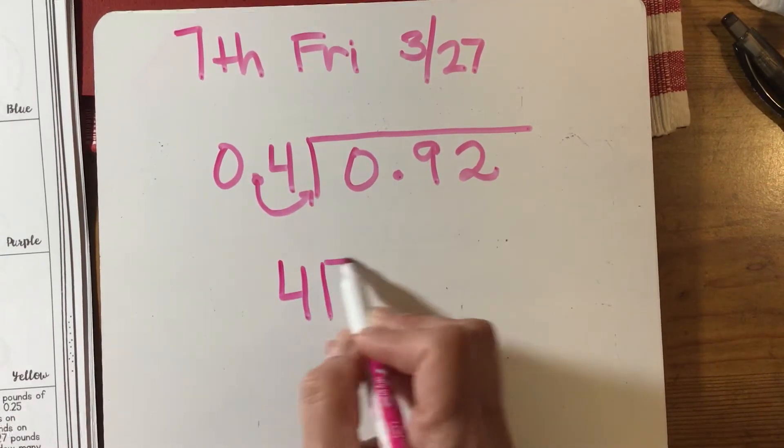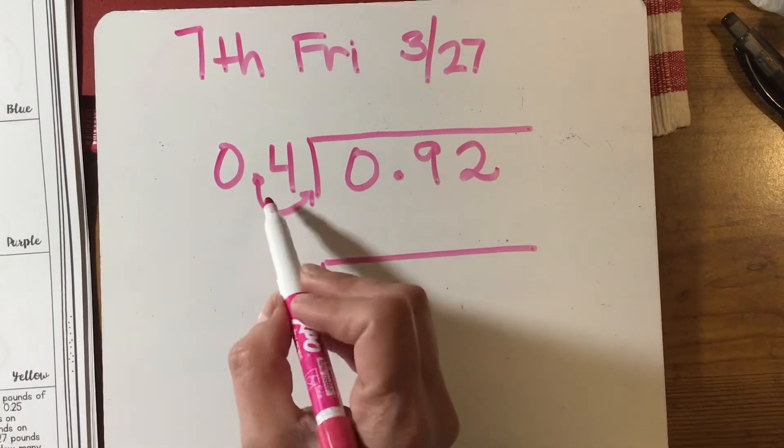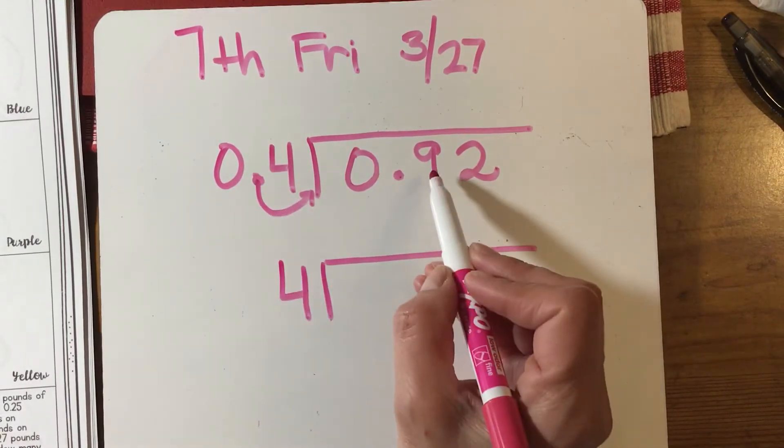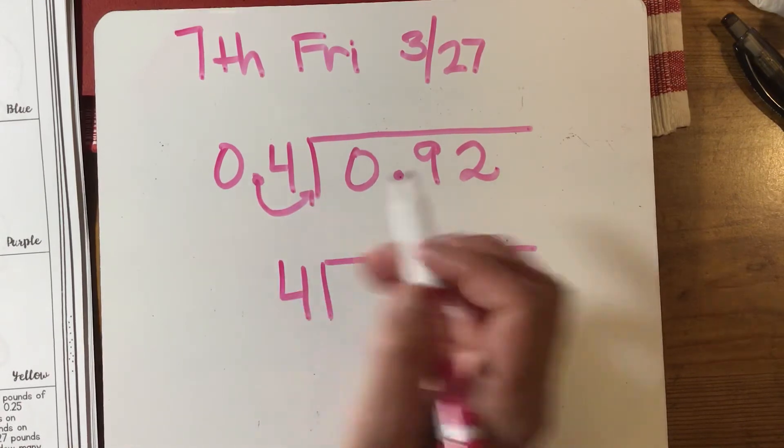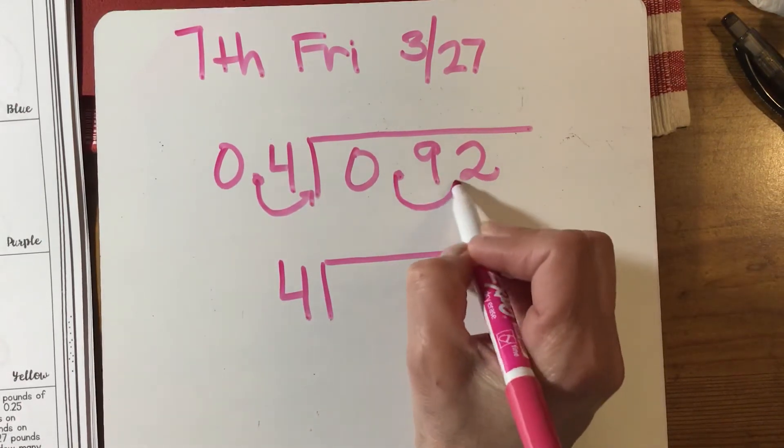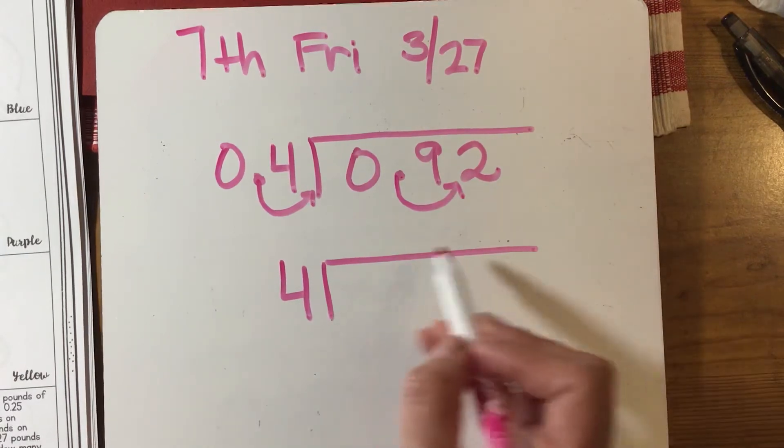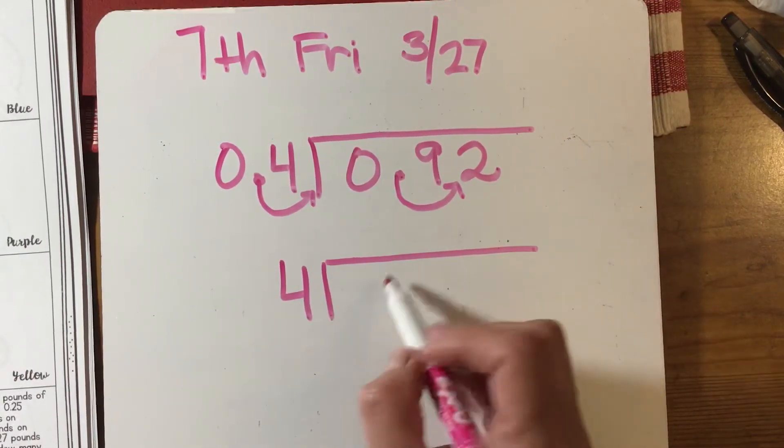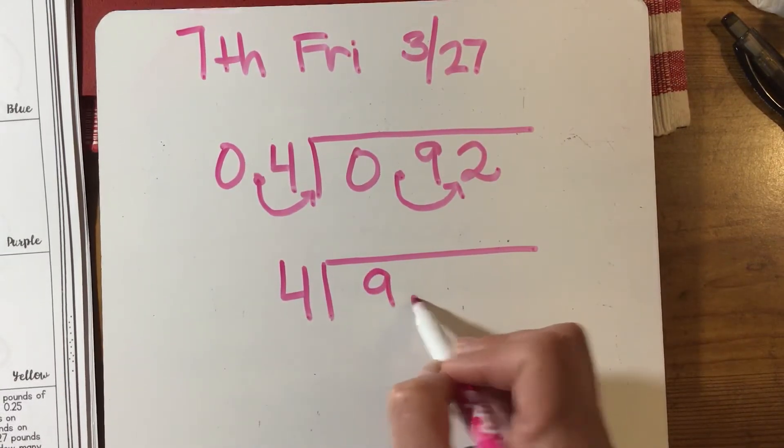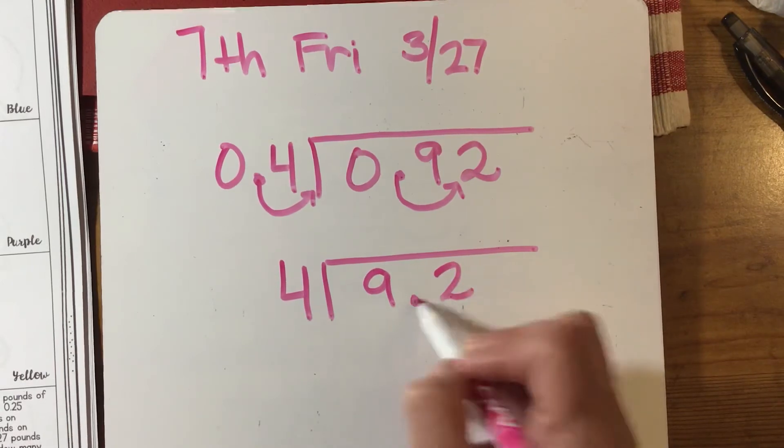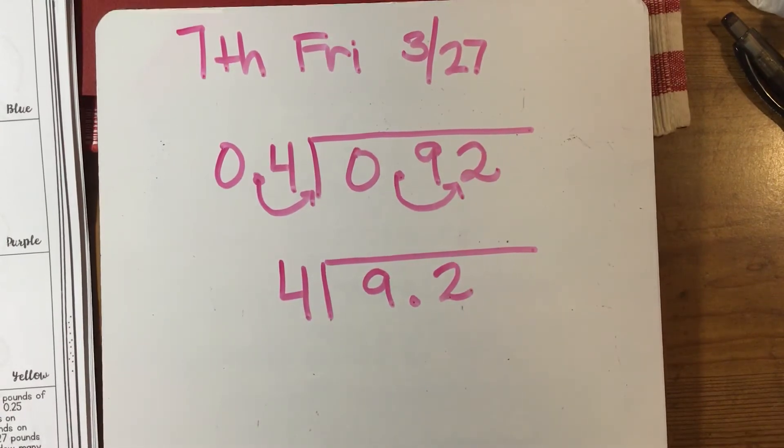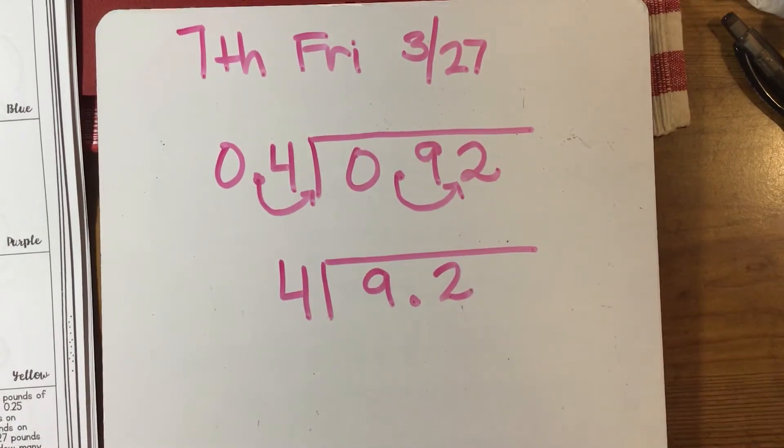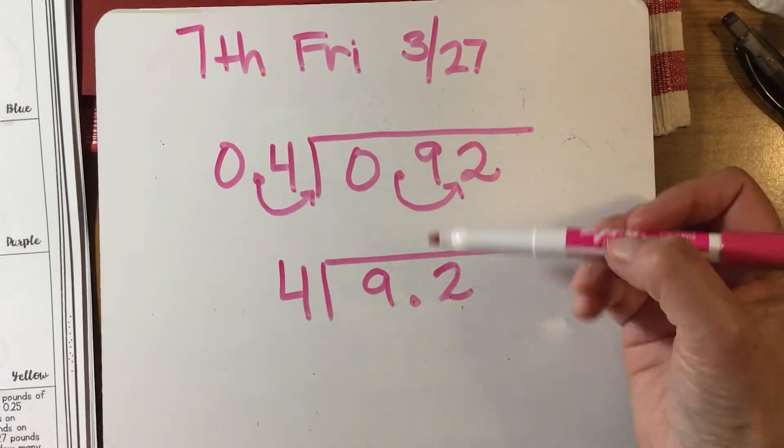Whatever you do to the outside, you've got to do to the inside. Because I moved the decimal once on the outside, I have to move it once on the inside. My new dividend becomes 9.2, or nine and two tenths. You don't even need that zero in front. Now, you don't have to do this, but I right away take that decimal and put it right up top. That way I know I'm not going to forget it.